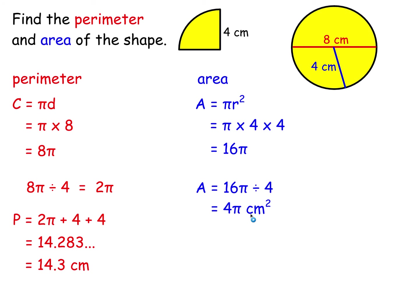If you want a decimal answer, on the calculator there is an SD button you press and it will turn into a decimal, which you then round as appropriate. So, simply: for a quarter circle, the area is a quarter pi r squared, and the perimeter is a quarter of pi d — but for the perimeter you've got some straight edges to add on to get the full outside edge.